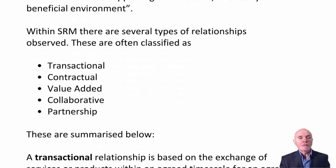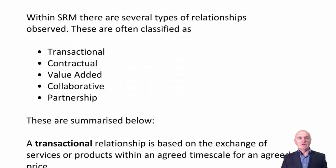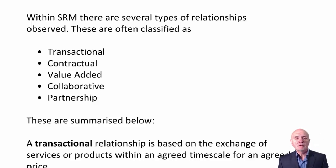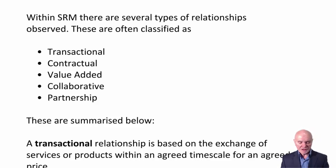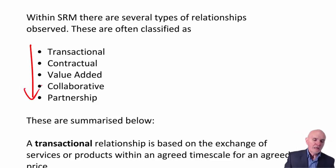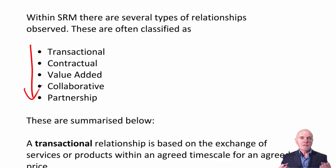Here we have some of the different models or sorts of relationships that there might be between suppliers and purchasers: transactional and contractual, value-added, collaborative, and partnership. As we go down this list, we're getting further and further away from this confrontational, me-versus-you situation, towards a partnership where we're all in it together for mutual benefit.